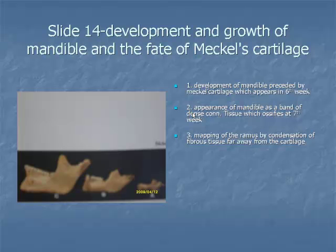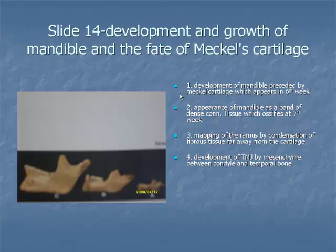Item 4: The TMJ develops from the mesenchyme between the developing condylar cartilage below and the temporal bone above, which develops intramembranously. By the twelfth week, two clefts appear in the mesenchyme producing the upper and lower cavities, with the remaining mesenchyme becoming the interarticular disc. The joint capsule develops from the mesenchyme surrounding the developing joint. At birth, the mandibular fossa is flat and there is no articular eminence; it becomes prominent following the eruption of teeth.